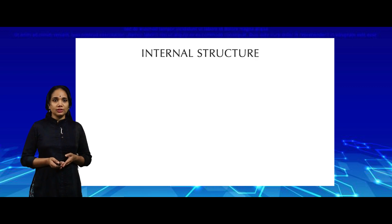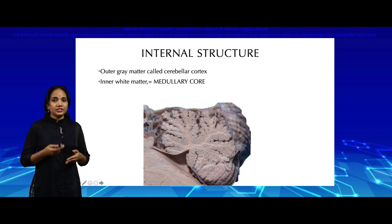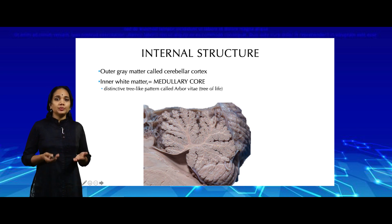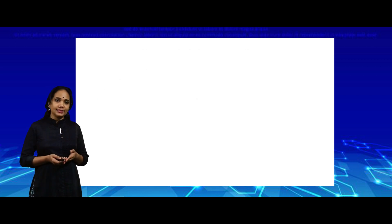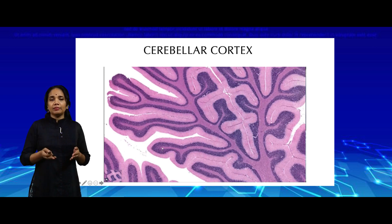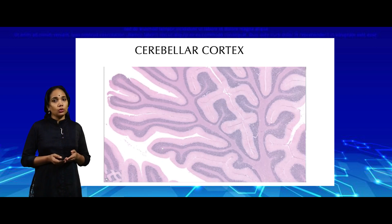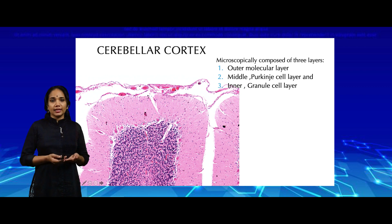Before we go on to the functional subdivisions, let us revise what you have already seen in my previous video. The cerebellum consists of an outer gray matter and an inner white matter. The inner white matter is called the medullary core and is arranged in a tree-like pattern called the arbor vitae, meaning the tree of life. Within this white matter we have the four deep nuclei of the cerebellum. Looking at the histology, the cortical layers are microscopically three: an outer molecular layer, an inner granular cell layer, and a middle Purkinje cell layer.